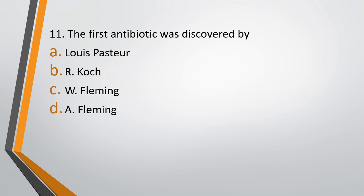Question 11. The first antibiotic was discovered by: Option A, Louis Pasteur. Option B, Robert Koch. Option C, W. Fleming. Option D, Alexander Fleming. The correct answer is option D, that is Alexander Fleming discovered the first antibiotic. Penicillin from the fungus Penicillium was discovered by Alexander Fleming.